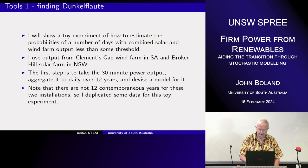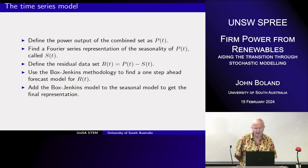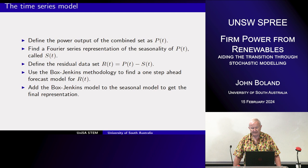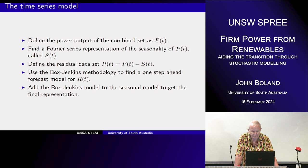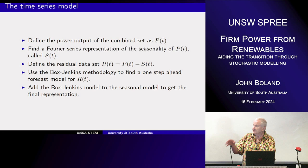For the time series model, I define the combined power output Pt, find a Fourier series representation of its seasonality S(t), define the residual dataset R(t) as the difference between the two — removing the seasonality — and then use the Box-Jenkins methodology to find a one-step-ahead forecast model for R(t). If you don't know Box-Jenkins, I'm essentially finding a so-called autoregressive process to model the de-seasonalised data.